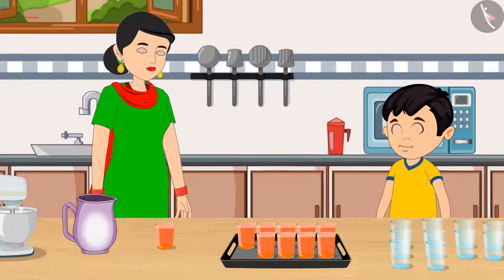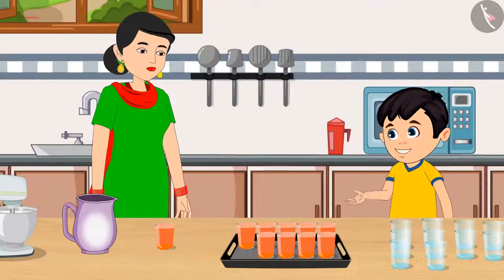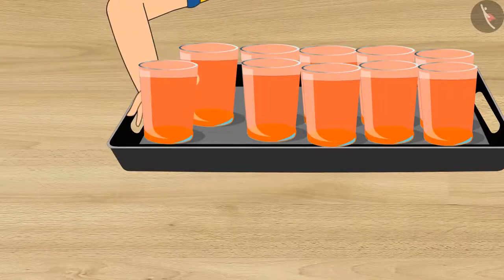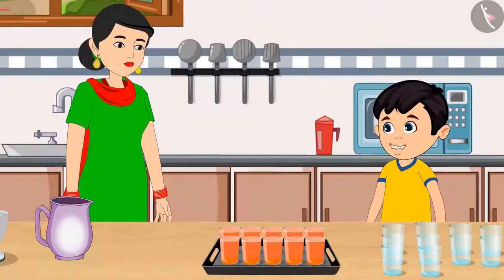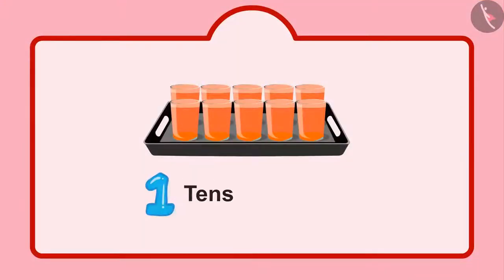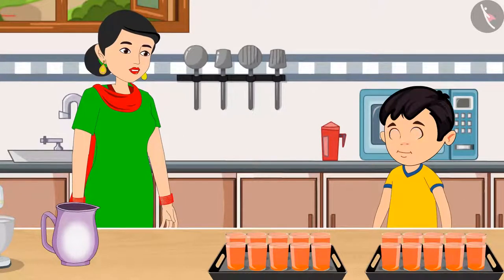So this means, Chotu, right now we have 9 units. Chotu said, 'Yes, Mummy, I remember.' Now, if we put one more glass in this plate, it will be a group of 10 glasses, and we call it 1 ten. Mummy said, 'You are absolutely right, Chotu. Here you go — your sherbet is ready.'